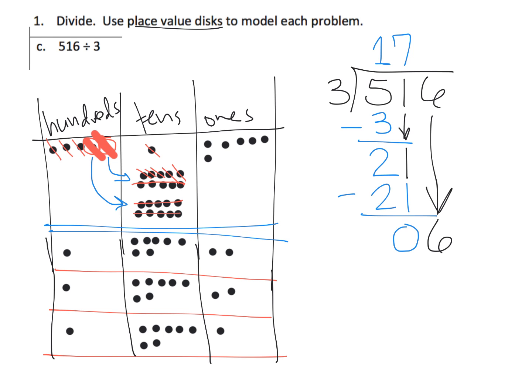Each group gets 2 dots from the 6 ones, using up all 6. In the standard algorithm: 6 dots sorted into 3 groups means 2 dots in each group, we use 6 total, and have nothing left over. Eureka Math just wanted us to model this with place value disks — the standard algorithm work here is a bonus. The more practice we do with the standard algorithm, the better.